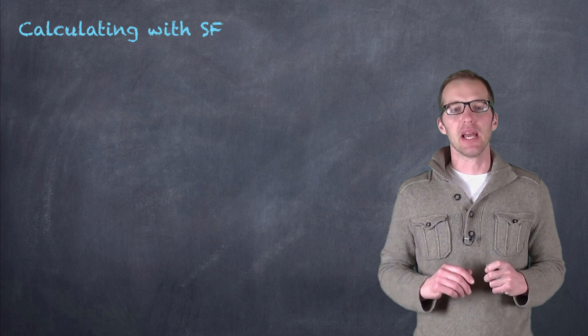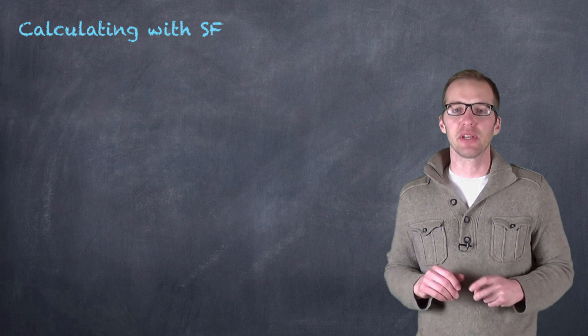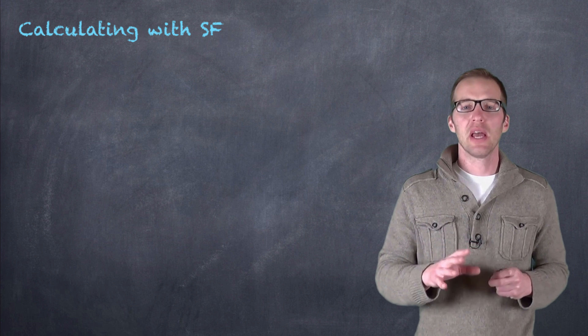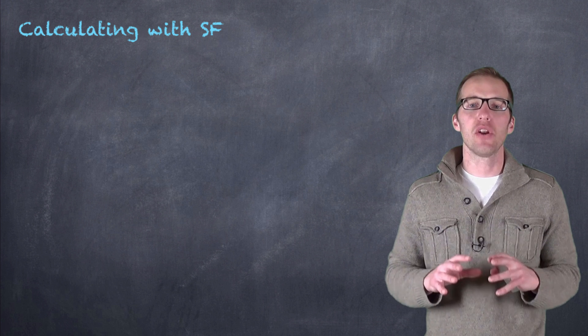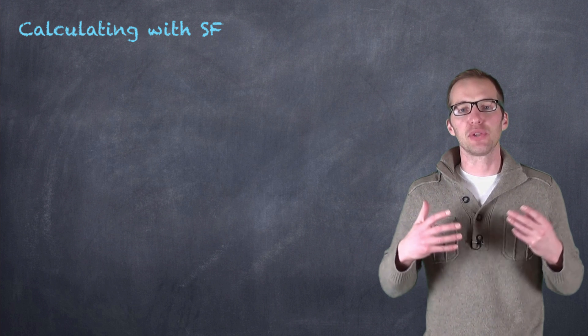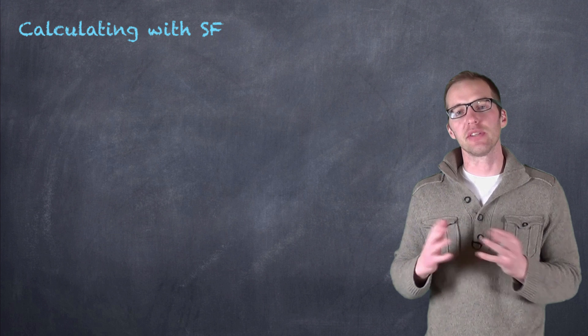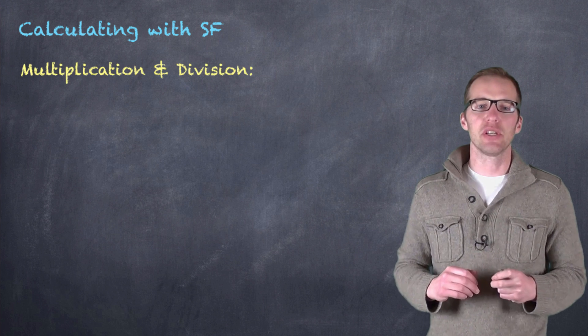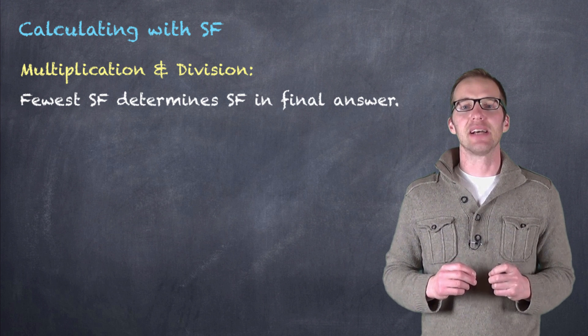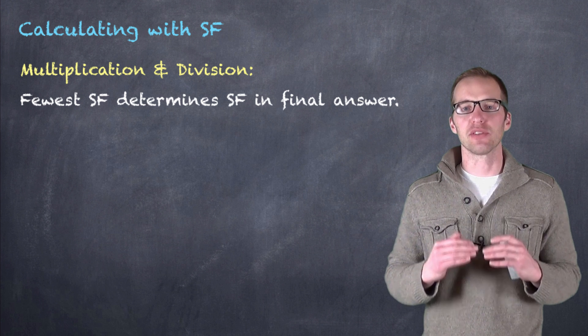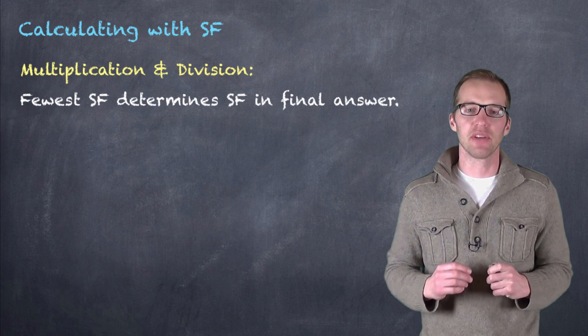Now where significant figures really come into play is when we're using them in calculations, and this is probably where most students are going to see significant figures and have to remember those significant figure rules the most. Now in multiplication and division, and in addition and subtraction, in fact in any manipulation that you make with these numbers, you cannot assume precision. So you have to represent your answer in the least precise value that you're using. But the rules are a little different for multiplication and division than they are for addition and subtraction. So in multiplication and division, we are going to represent our final answer in the same number of significant figures as the value that we used with the fewest. So whichever value has the fewest number of significant figures in our multiplication or division, our final answer has to have that same number of significant figures as well.